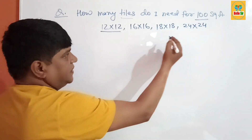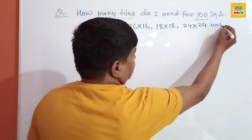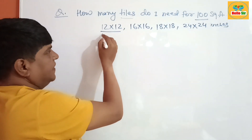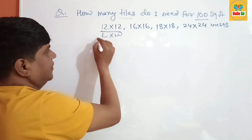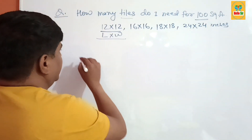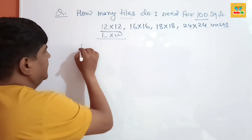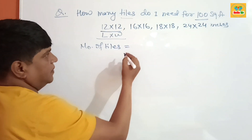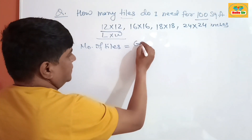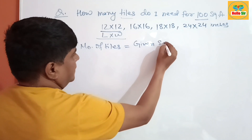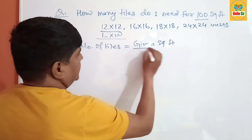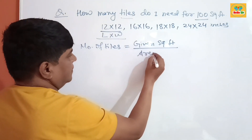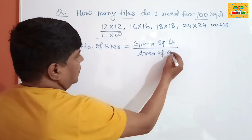These tiles are measured in inches. 12 by 12 inches means length and width. If you want to calculate the number of tiles, you have to use the formula: given square footage divided by the area of one tile.